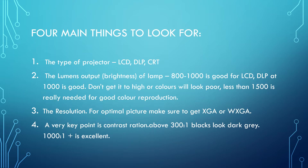The four main things to look for: first, the type of projector you are using — is it LCD, DLP, or CRT? Second, the lumen output of the lamp, or the brightness. It should be 800–2000 for LCD; DLP at 1000 is good. Don't get it too high or colors will look poor — less than 1500 is needed for good color reproduction. Third, the resolution — for optimal picture, make sure to get XGA or WXGA. Fourth, a very key point is contrast ratio: above 300 to 1, blacks look dark grey; 1000 to 1 plus is excellent.